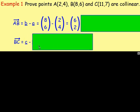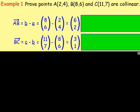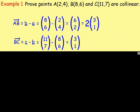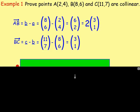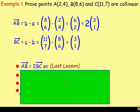Vector BC is going to be C minus B, so that's (11,7) take away (8,6), which gives us (3,1). We need to take out a common factor from the vector if we can, because we need the same vector in both AB and BC to show they are parallel. With vector AB, don't stop at (6,2) — you can take out 2 as a common factor, so it's 2 times the vector (3,1). There's the vector (3,1) in AB and (3,1) in BC, meaning these vectors will be parallel.